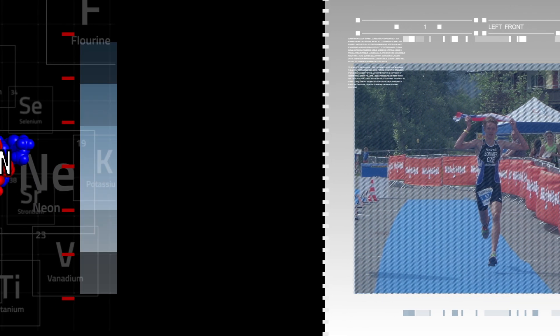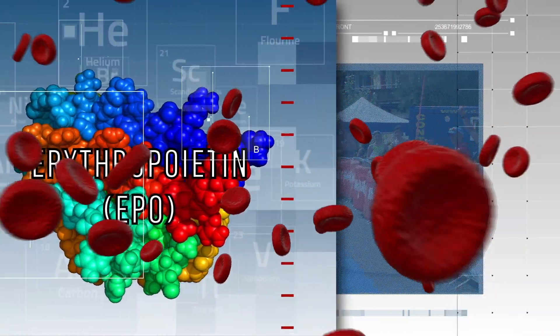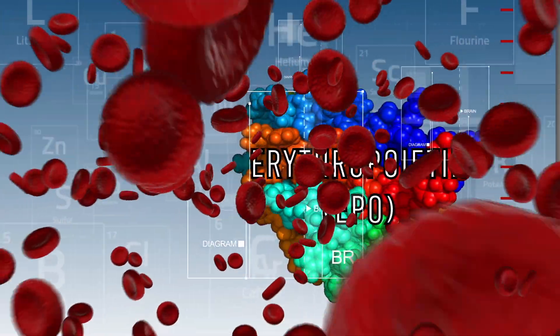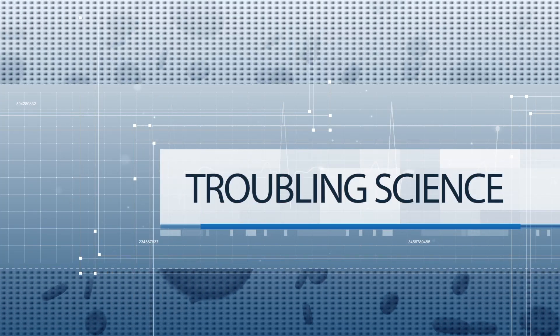Vojtech Sommer, a Czech triathlete, received a four-year doping ban for using recombinant EPO. However, the data that convicted him is less than convincing.